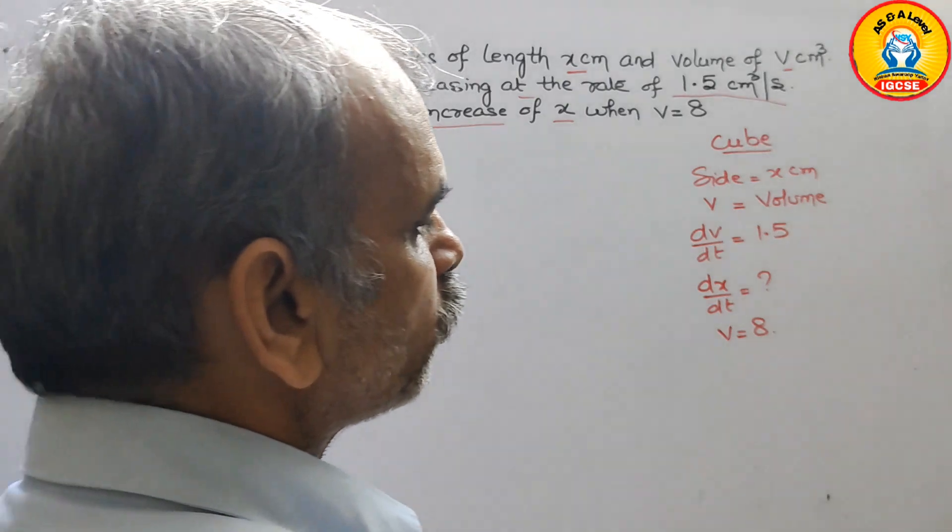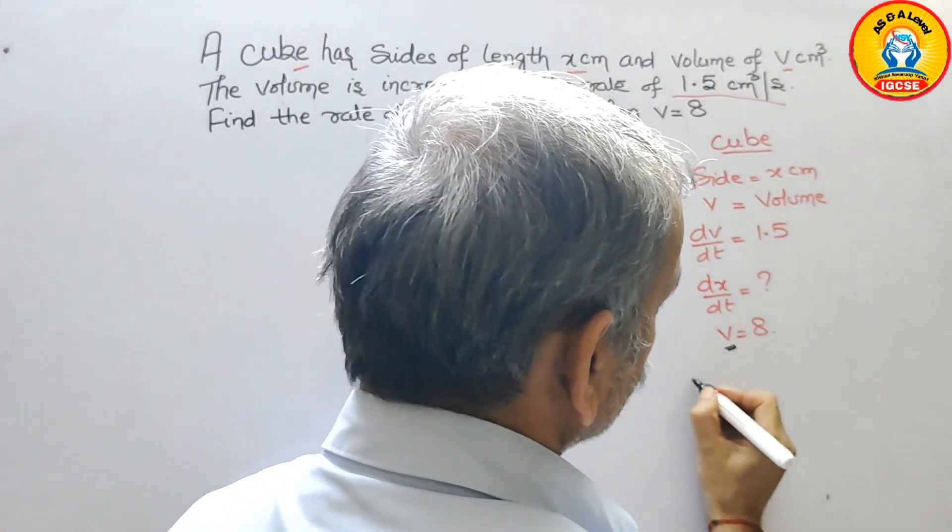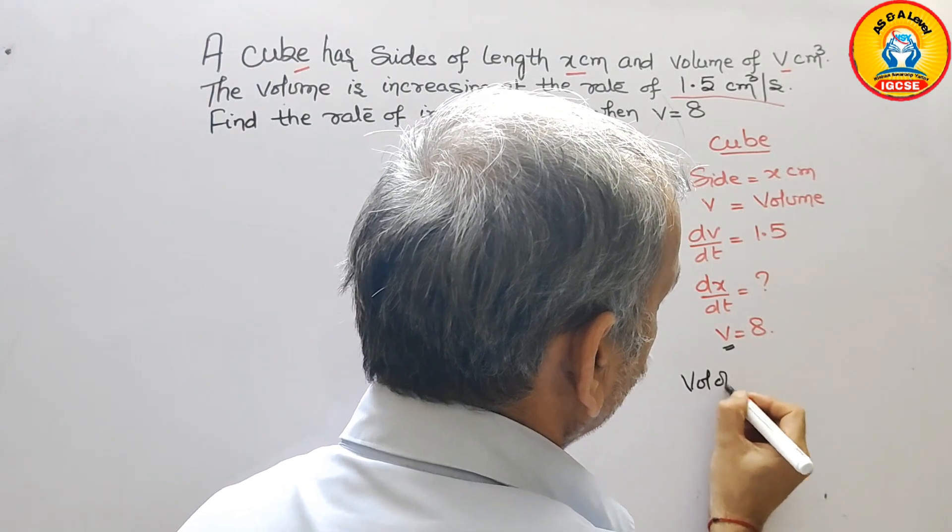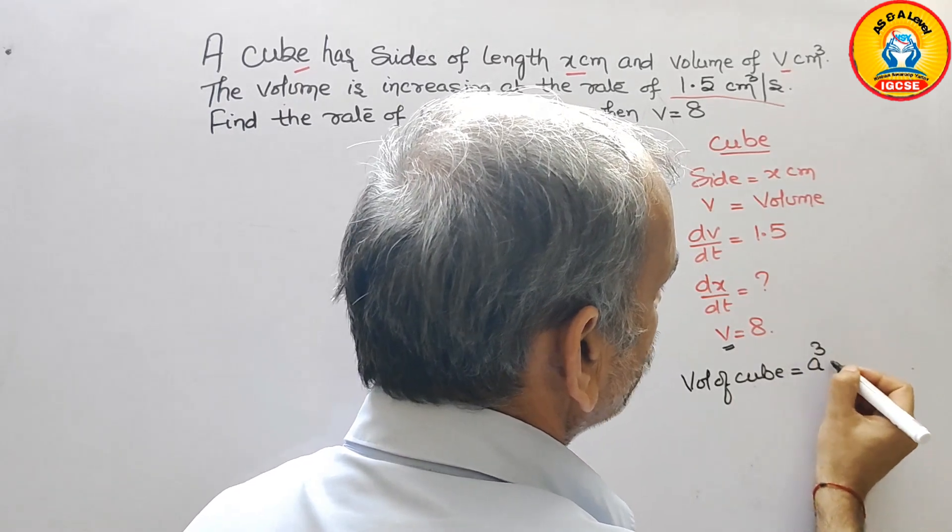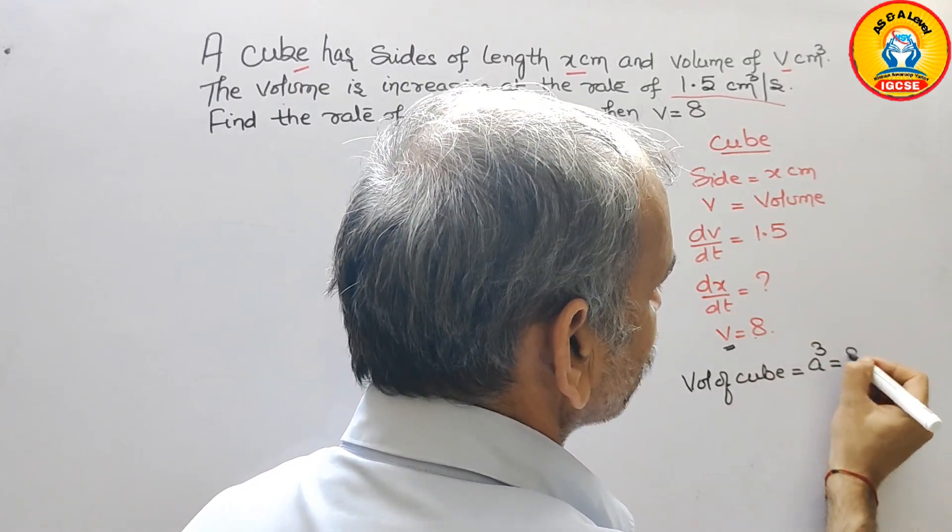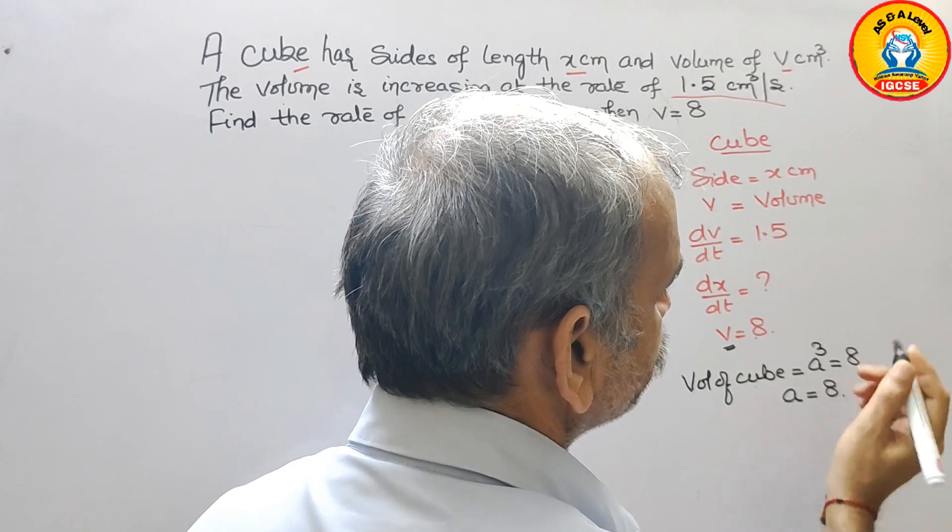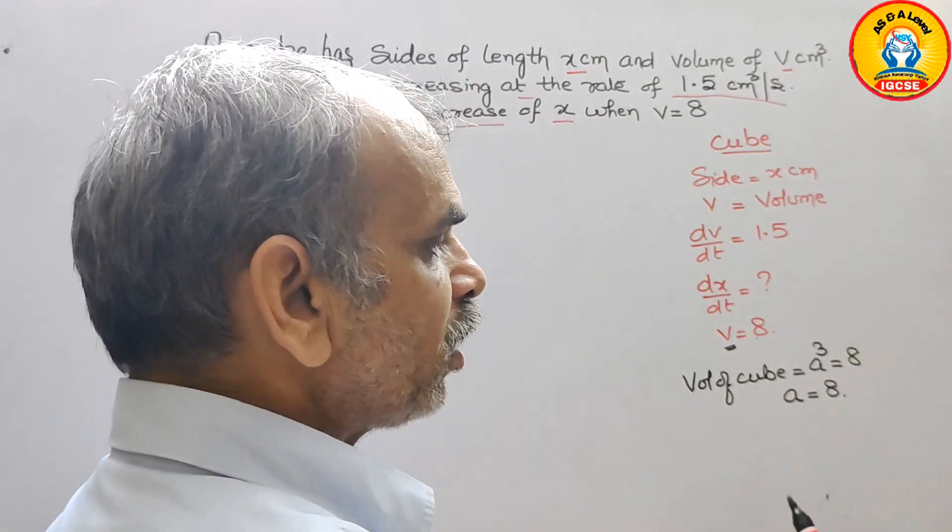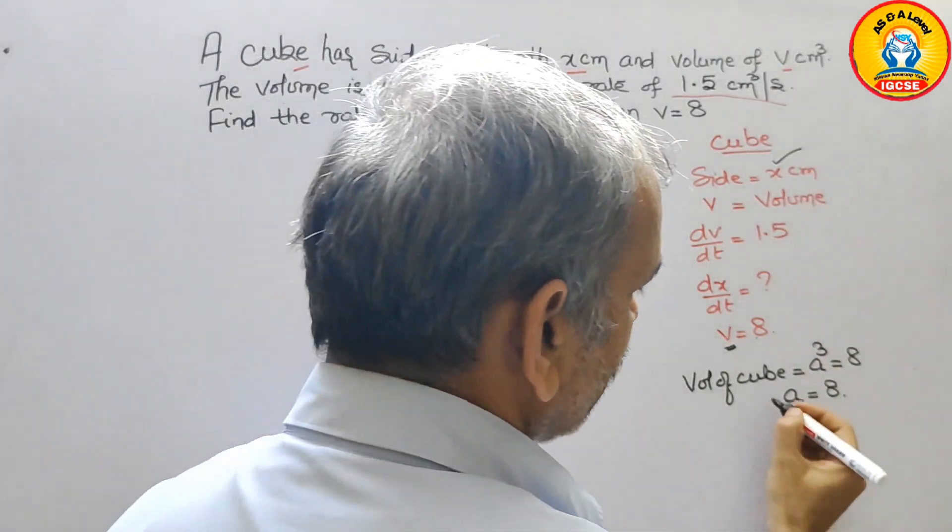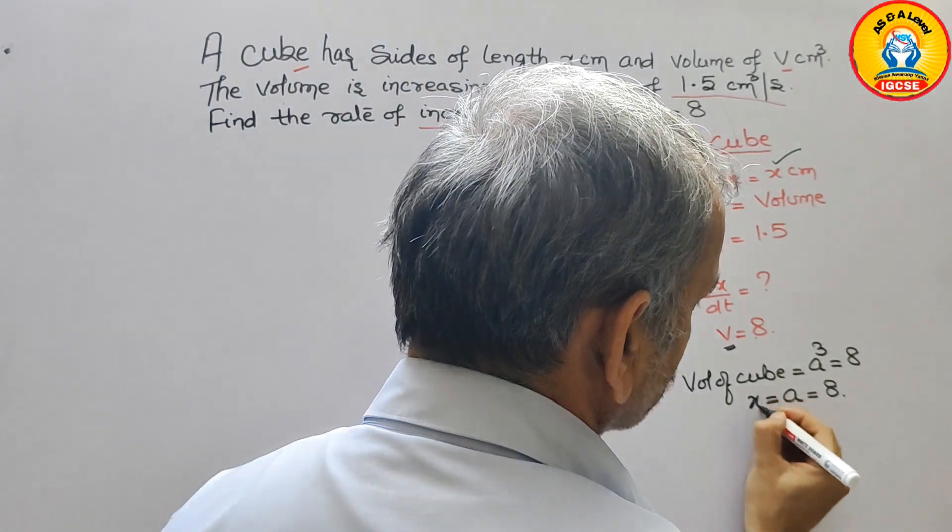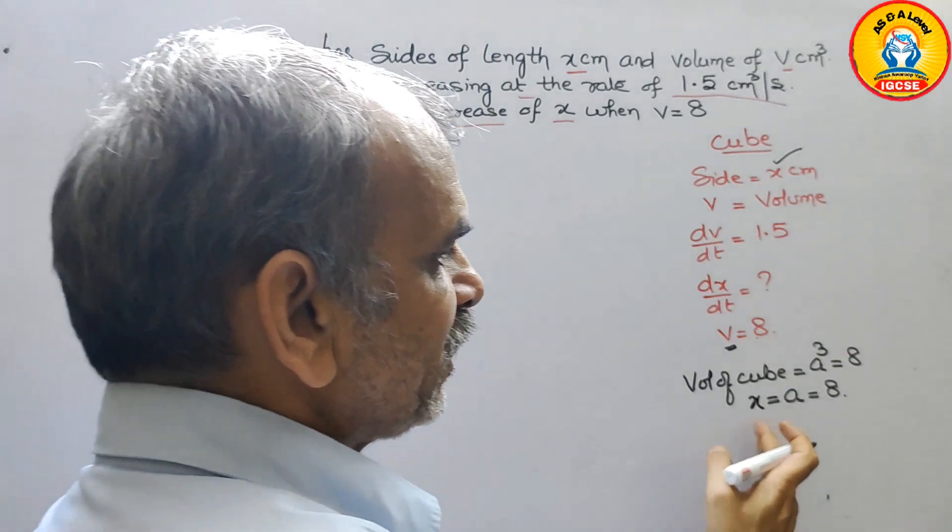So here what we have to do first: we have to write the volume of a cube. Volume of cube is equal to a cube and they have given that is 8. Instead of a you can write x also, because they have given here side x. So we can say a is equal to x. So x cubed is 8.